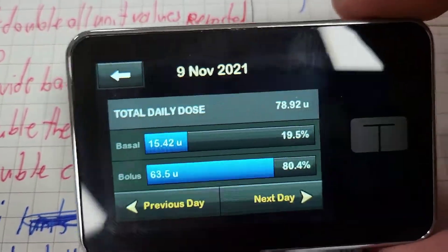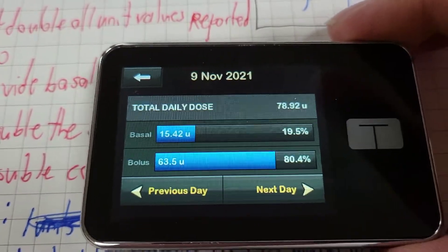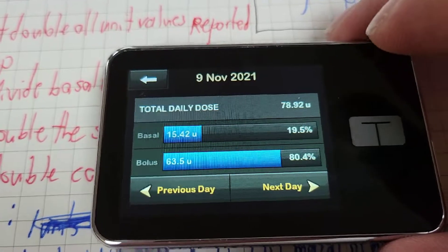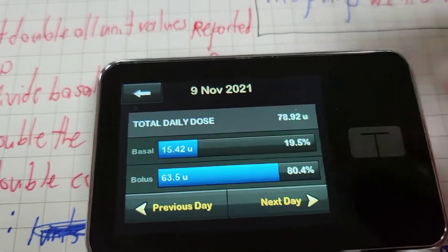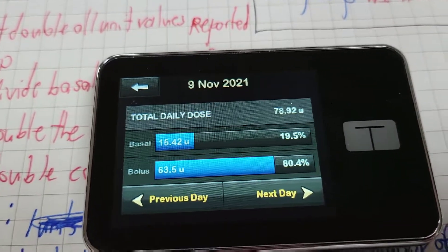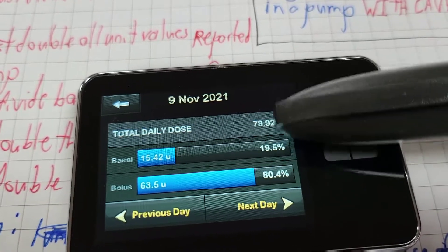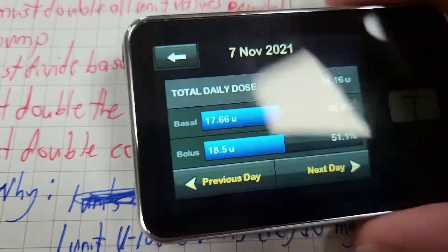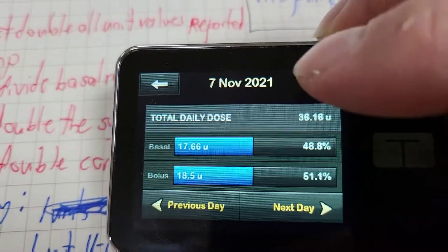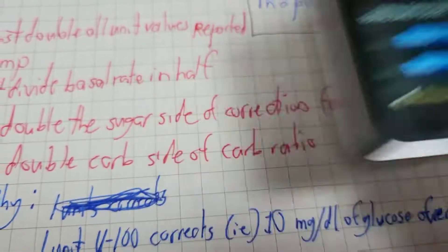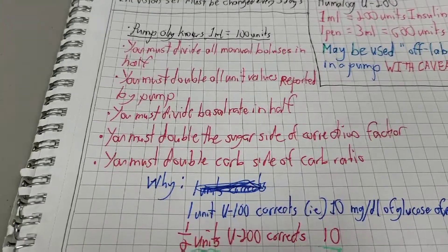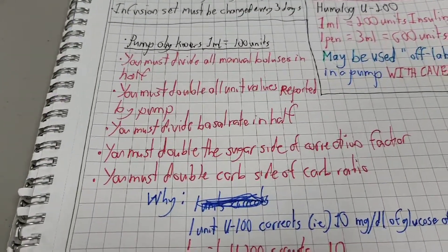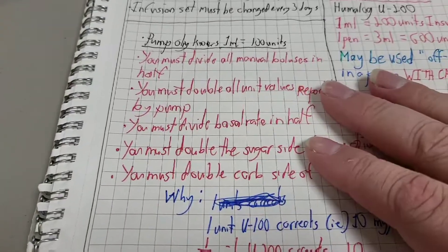Here we have an example from November 9th for myself. You can see my total daily dose was 78.92 units. That is not actually 78.92. That is actually closer to 160 units. The point being the numbers that are reported on the pump and the numbers that are reported in the app on the website, those numbers are half what was actually administered.